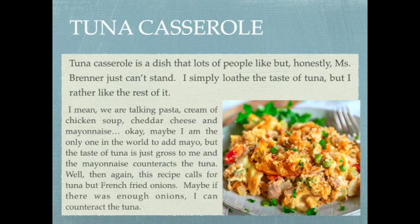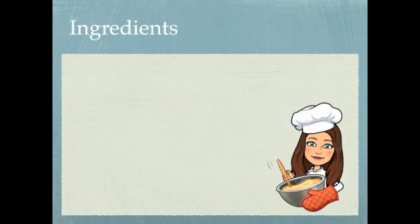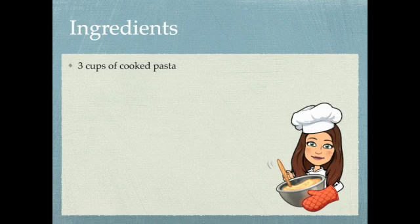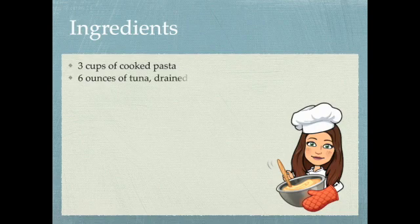Then again, the recipe we're going to be looking at today calls for tuna and french fried onions, so maybe there's enough of the onions to counteract the tuna. But we're talking about tuna casserole today. So here's our basic recipe. Three cups cooked pasta. So if you're following this recipe, that means you're going to have to go boil the pasta first. It takes seven minutes to boil pasta.